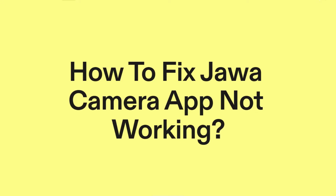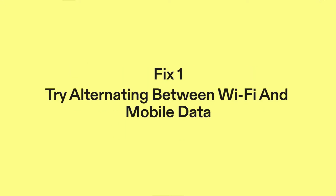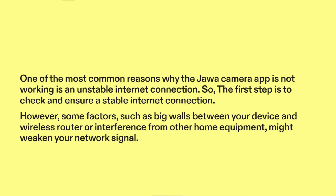How to fix Jawa camera app not working. Fix one: try alternating between Wi-Fi and mobile data. One of the most common reasons why the Jawa camera app is not working is an unstable internet connection. So, the first step is to check and ensure a stable internet connection.